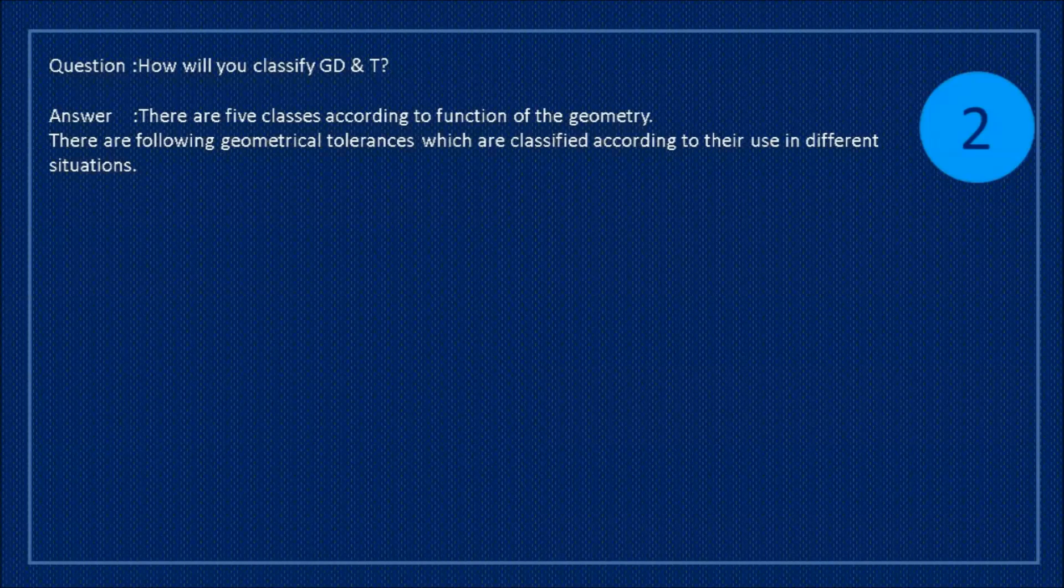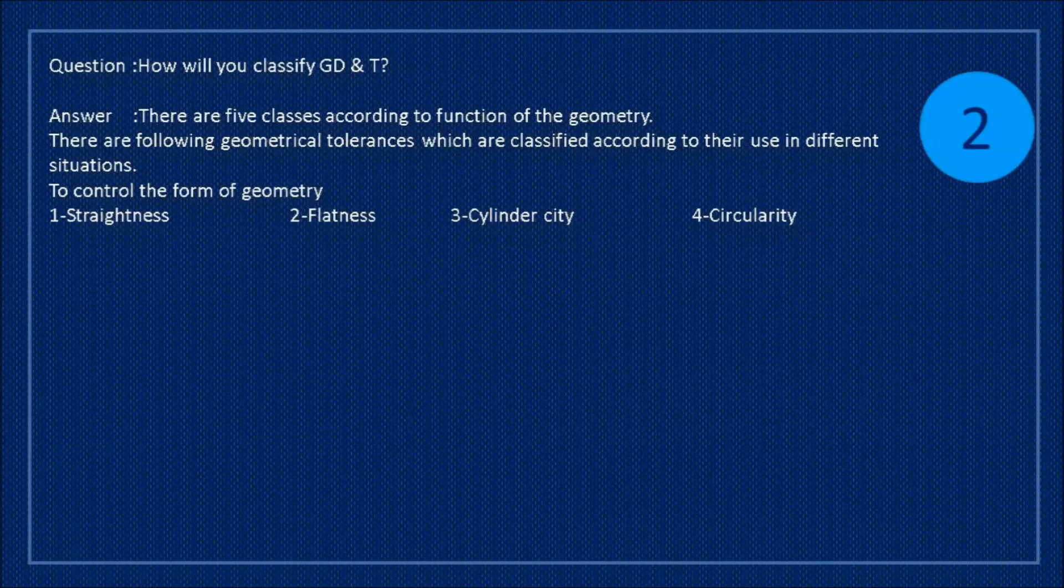How will you classify GD&T? There are following geometrical tolerances which are classified according to their use in different situations. To control the form of geometry: straightness, flatness, cylindricity, and circularity.